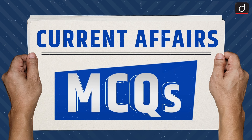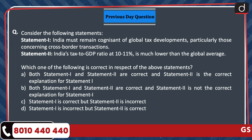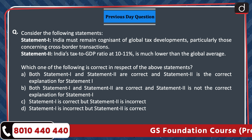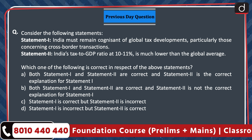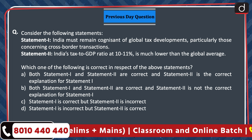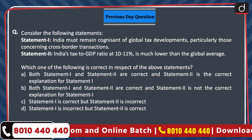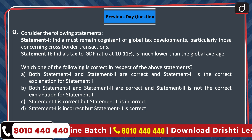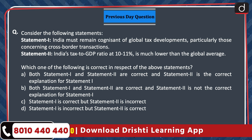Hello everyone, welcome to Current Affairs MCQ's program. Let's begin with the previous day's practice question. Consider the following statements: Statement 1 - India must remain cognizant of global tax developments, particularly those concerning cross-border transactions. Statement 2 - India's tax-to-GDP ratio at 10 to 11 percent is much lower than the global average. The correct answer is option A.